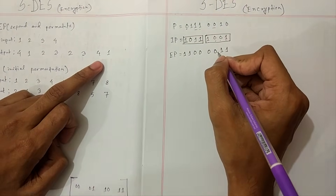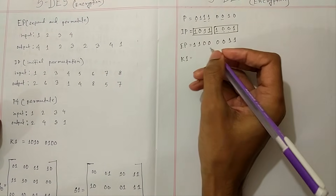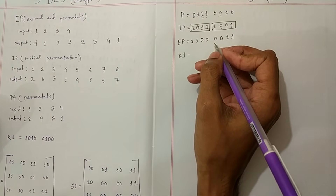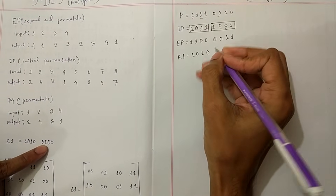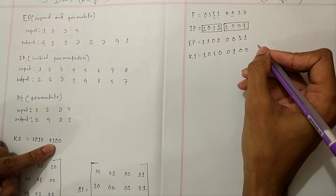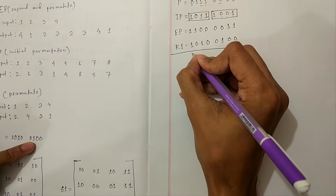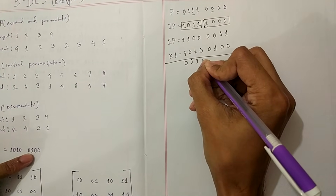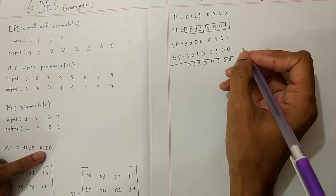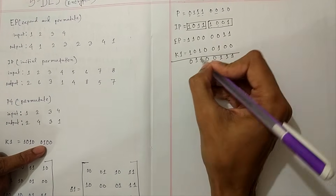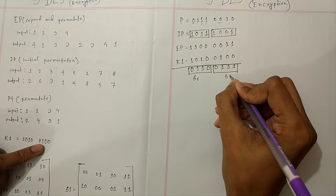Now we XOR the EP value with K1. K1 is the key from round 1 of key generation shown in the previous video. K1 is 1 0 1 0 1 0 1 0. We XOR EP with K1 and obtain the XOR result.